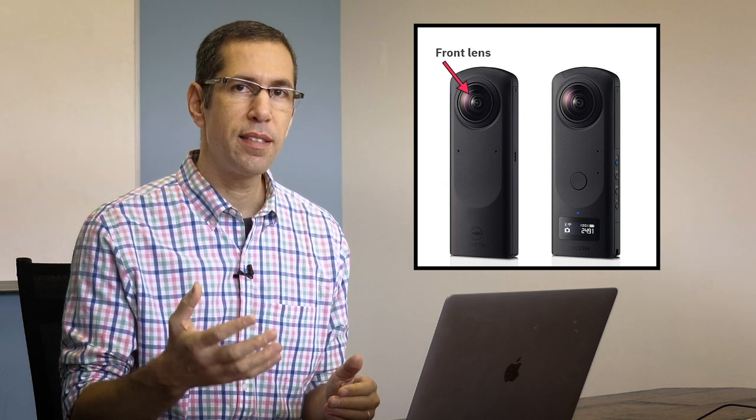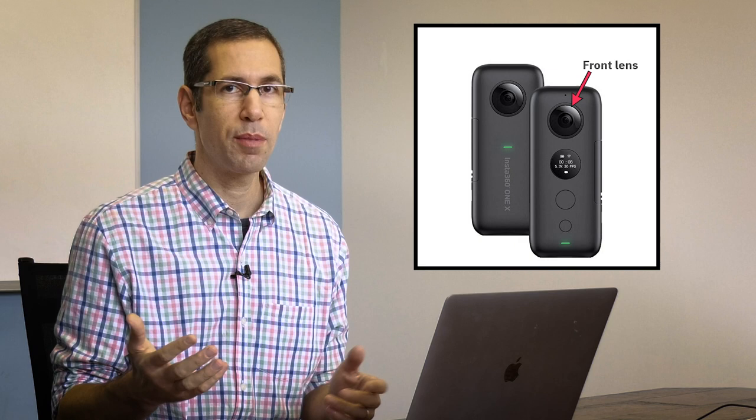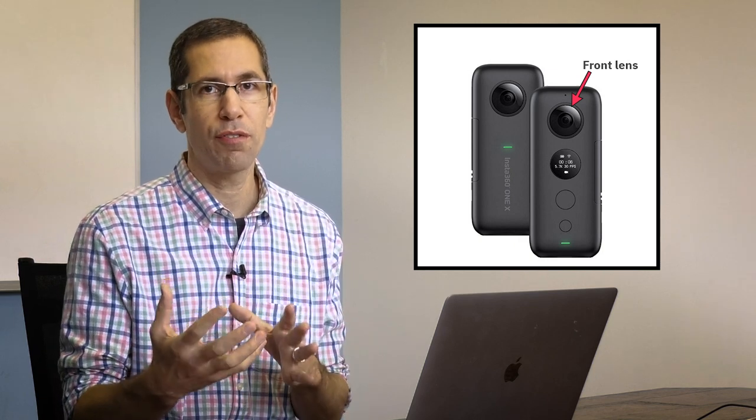In the same way that you would point the Matterport Pro 2 in the direction of the thumbnail you want associated with your 360 view, you want to do the same thing with a 360 camera — point the front lens in the direction of the thumbnail you want associated with your 360 view. With the Ricoh system that front lens is on the opposite side of the shutter button, and on the Insta360 cameras it's the exact opposite — their front lens is on the same side as the shutter button. Keep that in mind if that is something you're interested in doing.